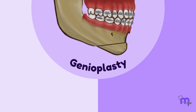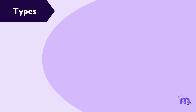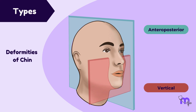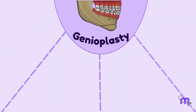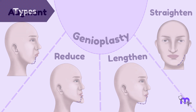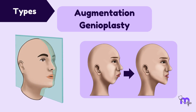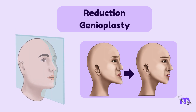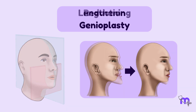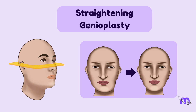This surgical procedure is frequently undertaken in conjunction with other orthognathic procedures. To understand the types of genioplasty, we must consider the deformities of the chin in all three planes: anteroposterior, vertical, and transverse. A genioplasty can be used to augment, reduce, lengthen, or straighten a chin. Therefore, the types of genioplasty include augmentation genioplasty for anteroposterior deformities, reduction genioplasty for both anteroposterior and vertical deformities, lengthening genioplasty, and straightening genioplasty for transverse deformities or facial asymmetry.